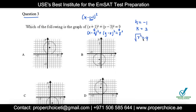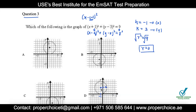Since r² = 9, taking the square root gives r = 3. So the center is (−1, 3) and the radius is 3. On the graph, the x-coordinate of the center is −1 and the y-coordinate is 3. Counting the radius from the center, it spans 3 units. This all matches option D.